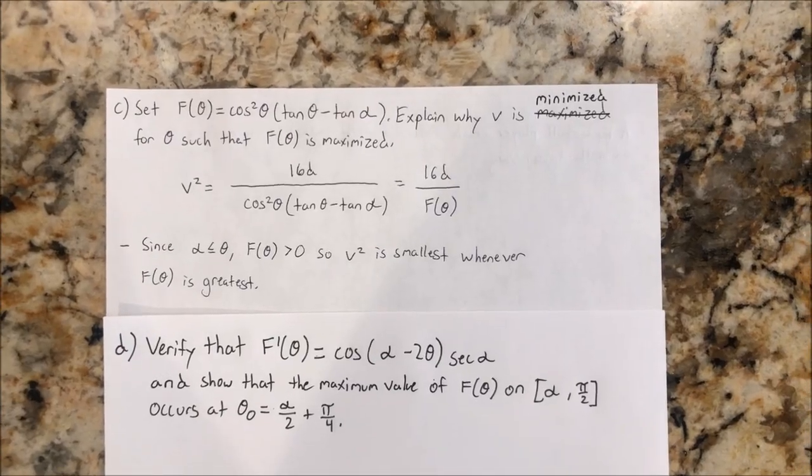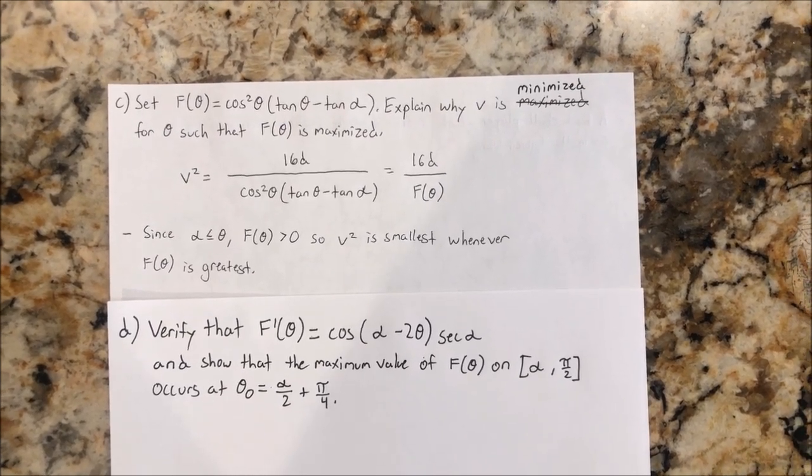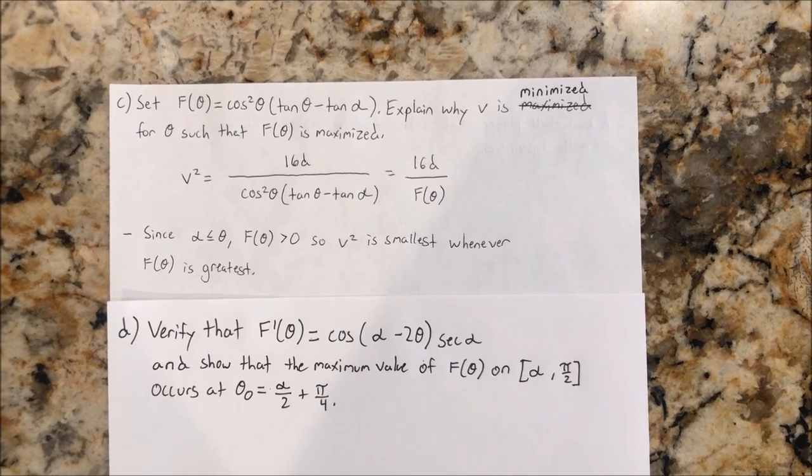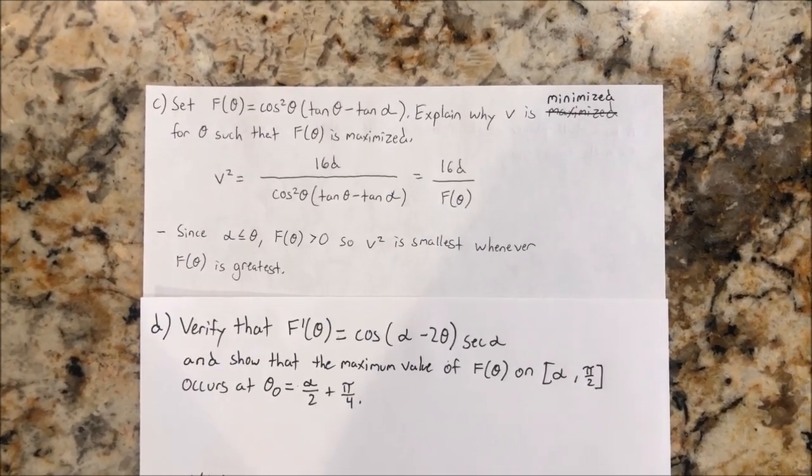So in part C, we found that v was minimized when f of theta was maximized. So in order to expend the least amount of energy possible, we would want to optimize this so that f of theta is at a maximum value.